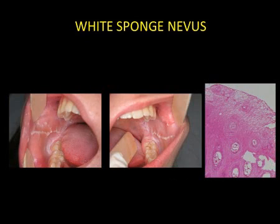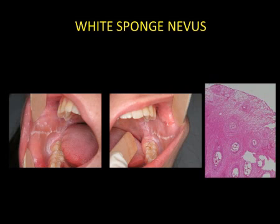White sponge nevus corresponds to an abnormality of certain cytokeratins. It manifests as severe intracellular edema and a bilateral white coloration of the mucosa.